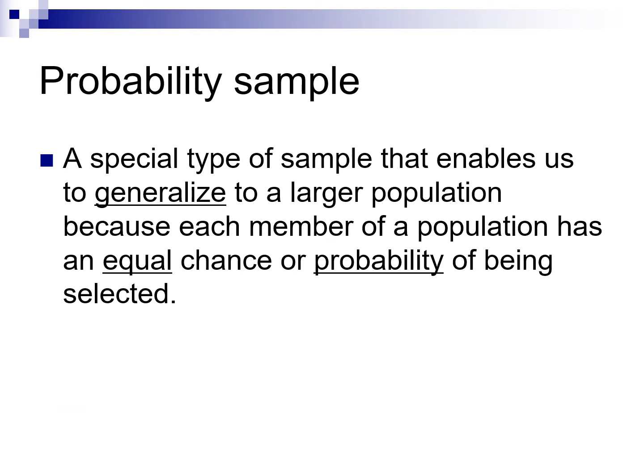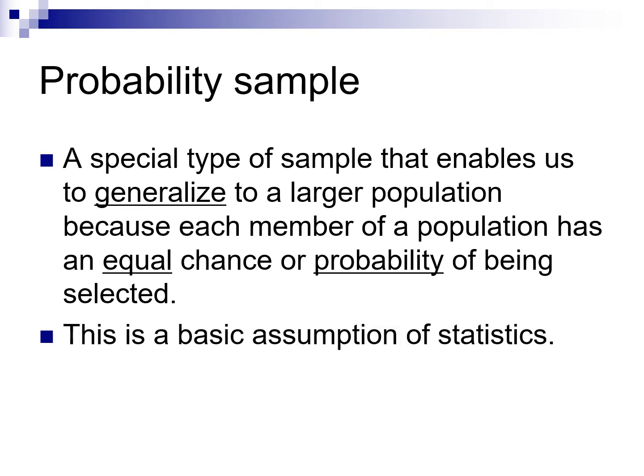A probability sample is a special type of sample that generalizes to a large population. The goal of random distribution and random selection — a key part of science — means that every member within the group has an equal chance or equal probability of being selected. This is a very basic but important assumption for research.